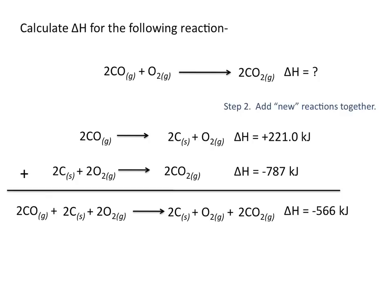The delta H value for this combined equation is negative 566 kilojoules per mole. But you'll notice that some compounds are the same on both the reactant side and the product side. Anything that's the same on both sides of the reaction arrow can be cancelled out.